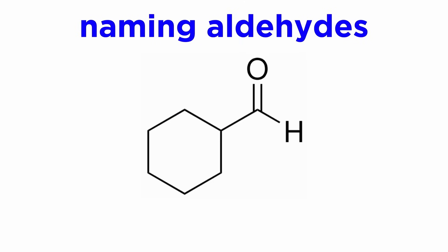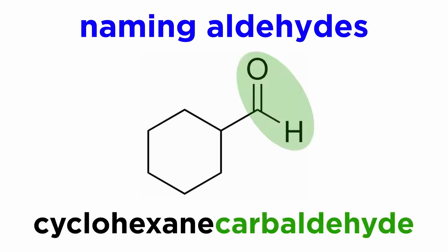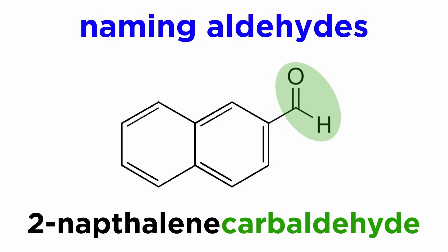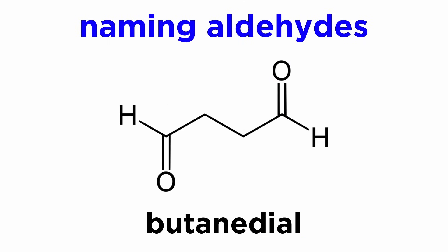There are also cyclic aldehydes, where the aldehyde is directly attached to the ring, and here we use the suffix -carbaldehyde. So this is cyclohexanecarbaldehyde, and 2-naphthalenecarbaldehyde.